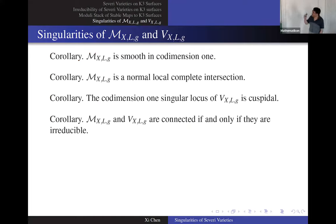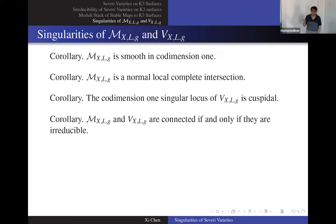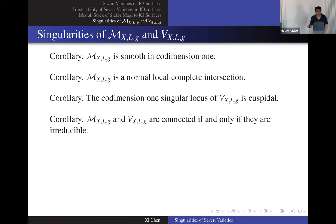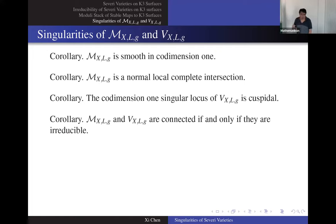Some consequences: because having one cusp still gives you a smooth point in the moduli space, the moduli space is smooth in codimension one. Combined with Cohen-Macaulay, M(X,L,g) is normal. What's the picture on the Severi variety side? If this curve has a cusp, the local job there is also a cusp — it's a tricky and interesting point. The singular locus of V(X,L,g) has codimension one locus which is the cusp locus. So the issue of irreducibility is the same as connectedness, and if you can prove connectedness — assuming the Bruno–Lelli-Chiesa paper is correct — this would finish the whole program.